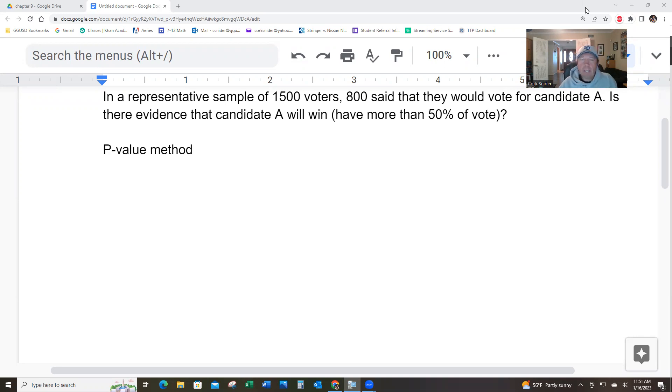So, in a representative sample of 1,500 voters, 800 said they would vote for candidate A. Is there evidence that candidate A will win, having more than 50% of the vote, in other words? No problem.